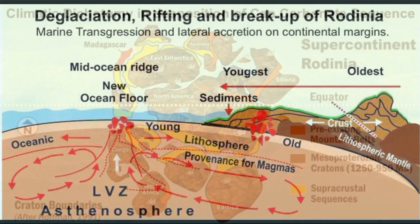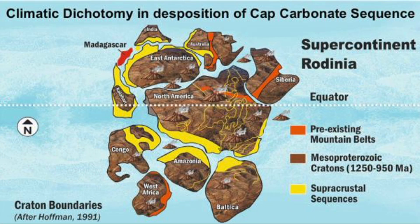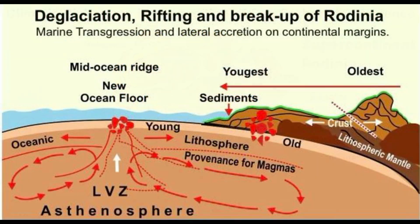The continued rifting caused transgressive deposition of the Marinoan cap carbonate rock sections, along with the diamictites. The syn-glacial and post-glacial sediments accreted to the coastal shelf and slopes of the tectonically affected margins of the continental blocks.